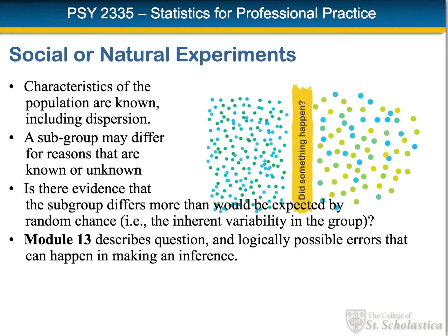One of the first kinds of inference we look at is the comparison of one sample to a population. We generally know the characteristics of the population including its dispersion, but we see a subgroup that may differ for known or unknown reasons. We ask: is there evidence that the subgroup differs more than would be expected by random chance? In Module 13, we look at that question and some logically possible errors that can happen in making an inference. In the picture on screen, we have a variety of colors mostly greens and blues on the left, and on the right the dots are larger with more greens and fewer blues — we need to ask if this difference could have just happened by chance.